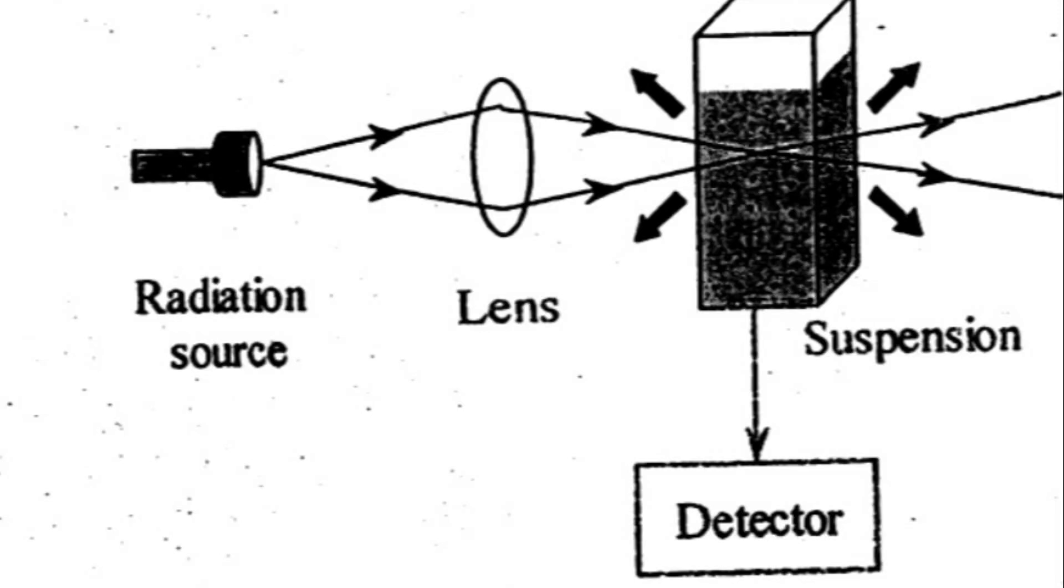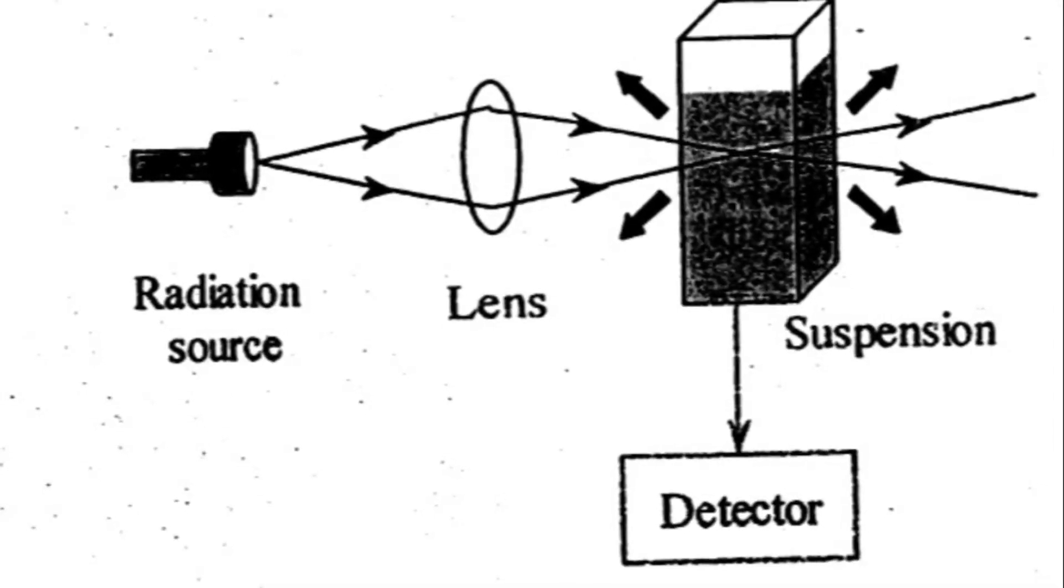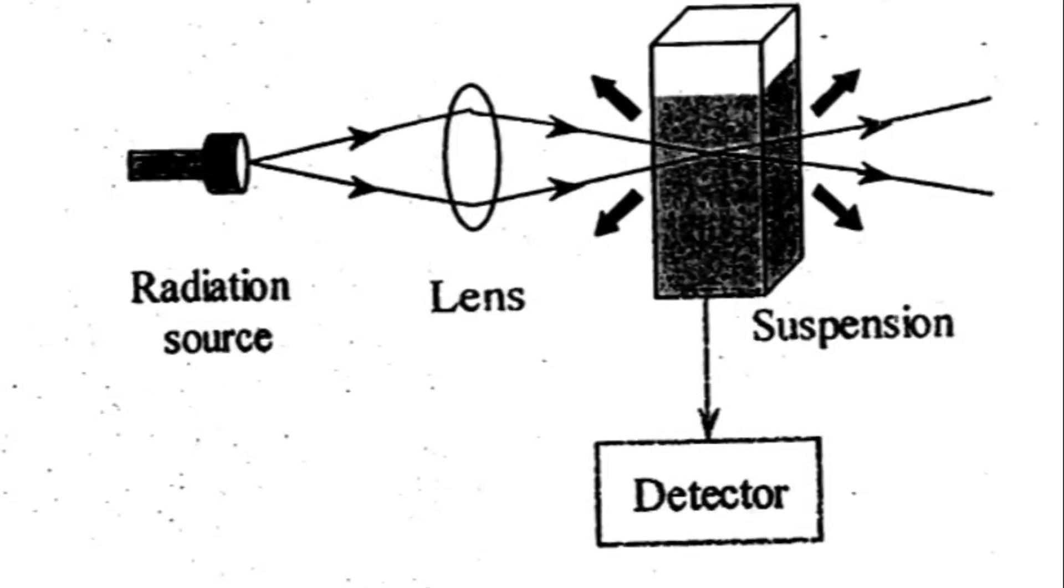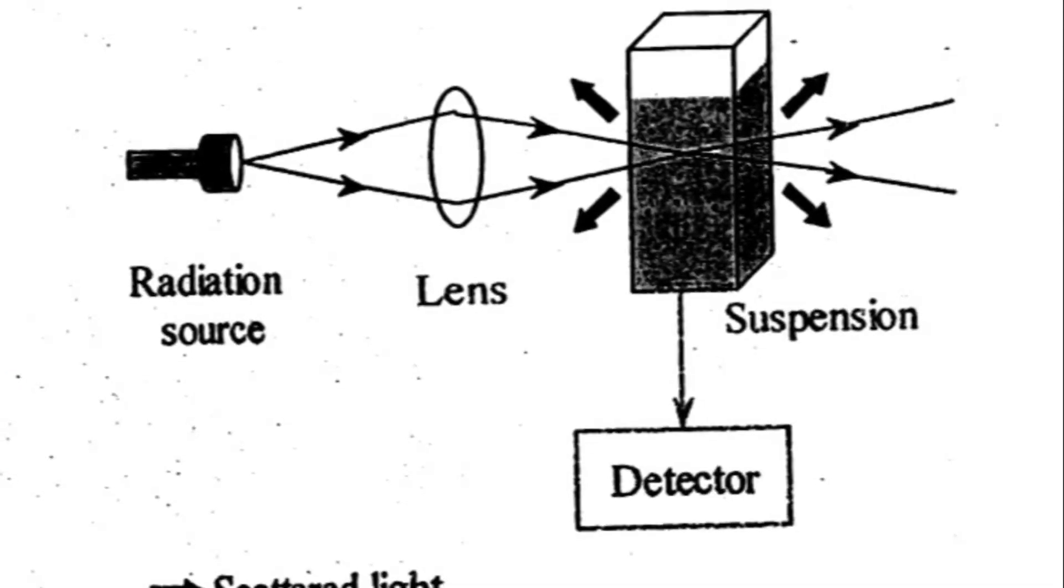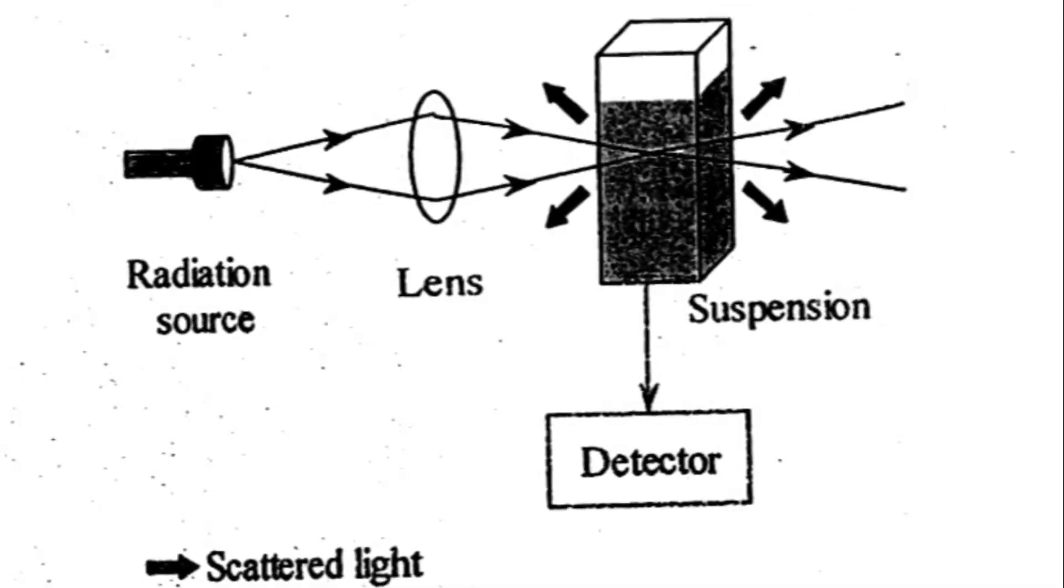So let's understand with help of simple diagram as shown here. When a ray of incident light comes from a light source, having certain wavelength passes through the cuvette, immune complexes will produce the phenomenon of light scattering which is detected by photomultiplier tube used as a detector.